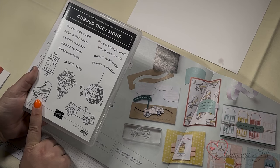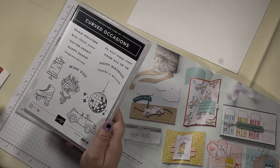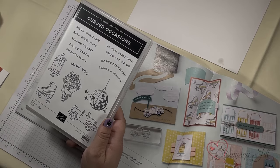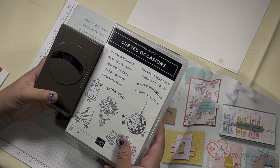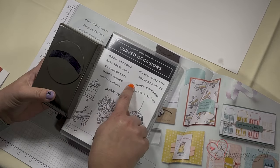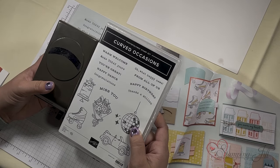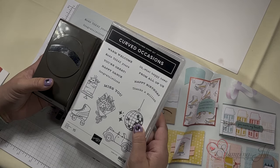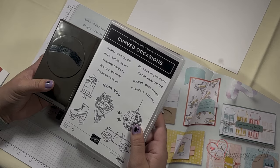I love to color with the Stampin' Blends, so I knew I wanted to play with this one. And then it bundles with a punch that you can put the different sayings into, or you can punch it out and make a fun interactive card. So I'm going to show you some different ways to make interactive cards with this.